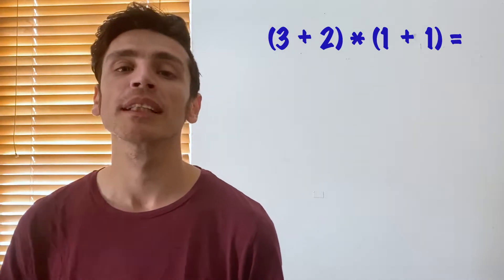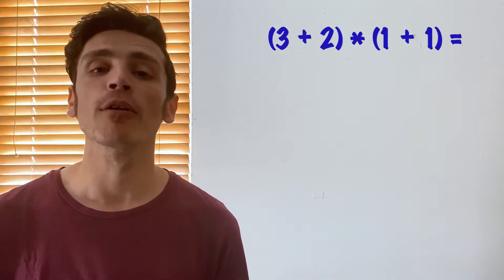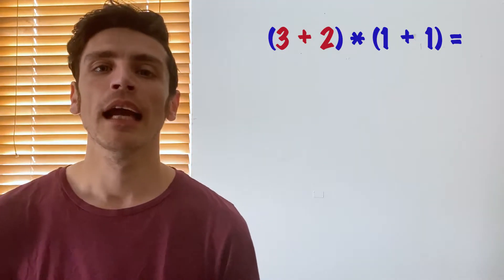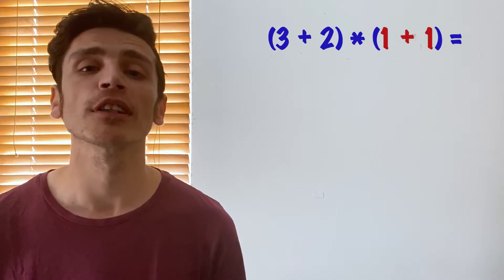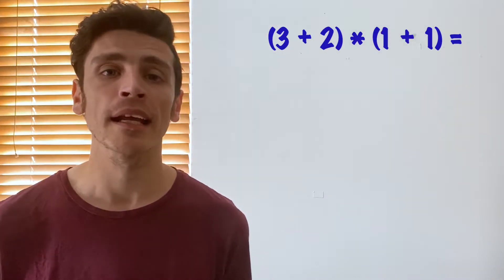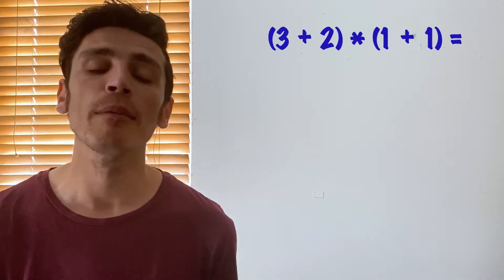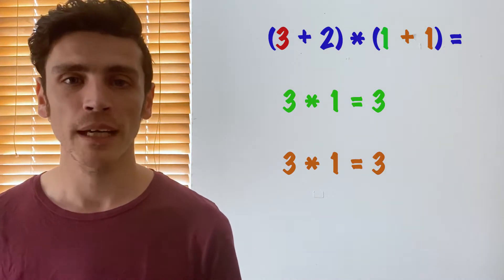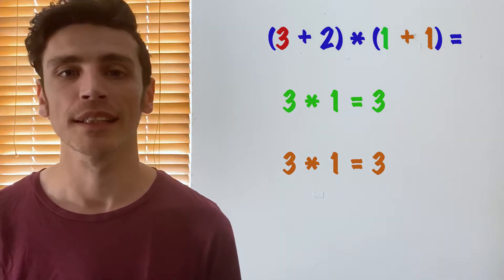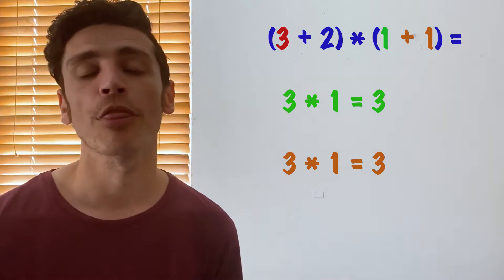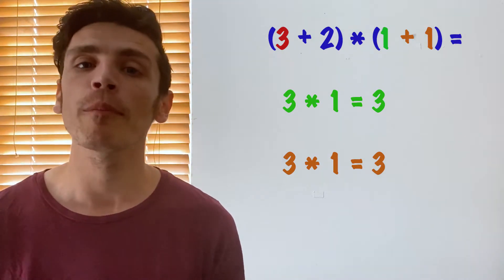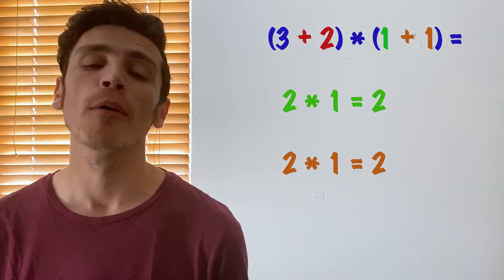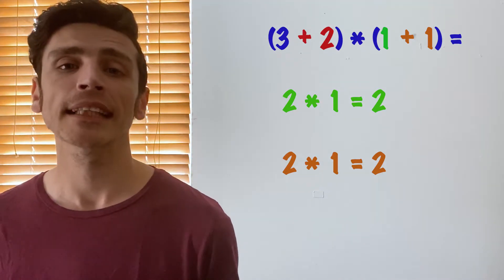When we're using distributive law, we look at the components of our brackets and we multiply them individually. Our first bracket has a component of 3 and a component of 2, and our second bracket has a component of 1 and another component of 1. We take the first component of the first bracket — which is 3 — and multiply it individually by the two components of the second bracket. So 3 multiplied by 1 gives me 3, and then 3 multiplied by 1 again gives me 3. Now we repeat the process with the second component of our first bracket, which is positive 2. So 2 multiplied by 1 gives me 2, and 2 multiplied by 1 again also gives me 2.